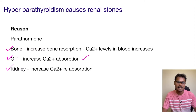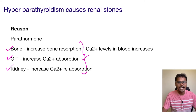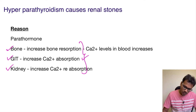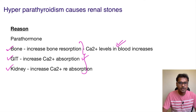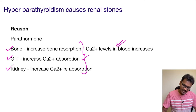In the kidney, parathormone also increases calcium reabsorption. So in all three places, calcium is being mobilized and brought into the blood, meaning overall calcium levels in the blood are going to be increased.